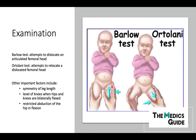There are some other important factors to include: the length of the leg — in dysplasia it may be shorter — the level of the knees when the hips and knees are bilaterally flexed, which is a different test, and restricted abduction of the hip in flexion.